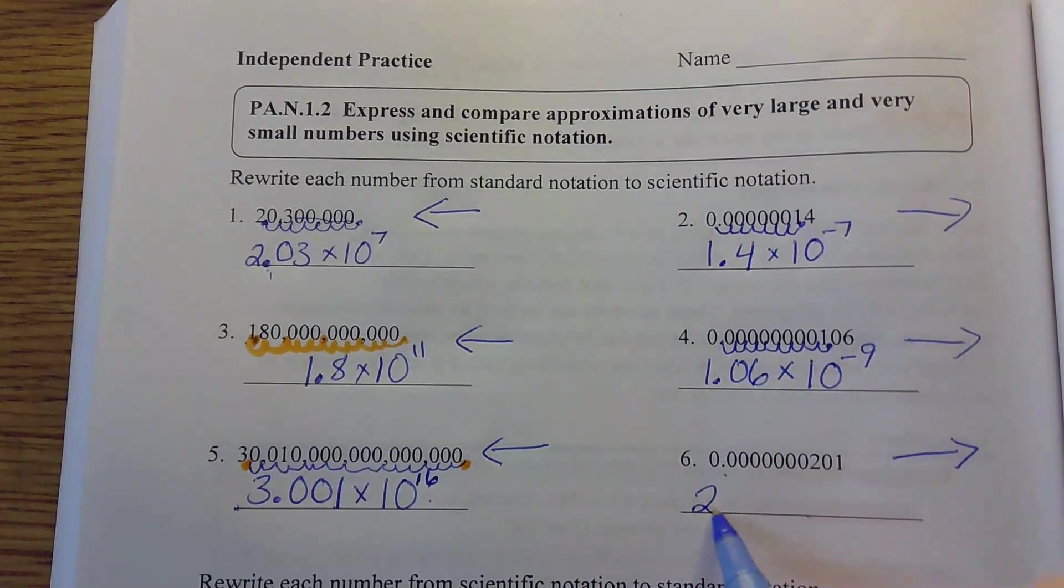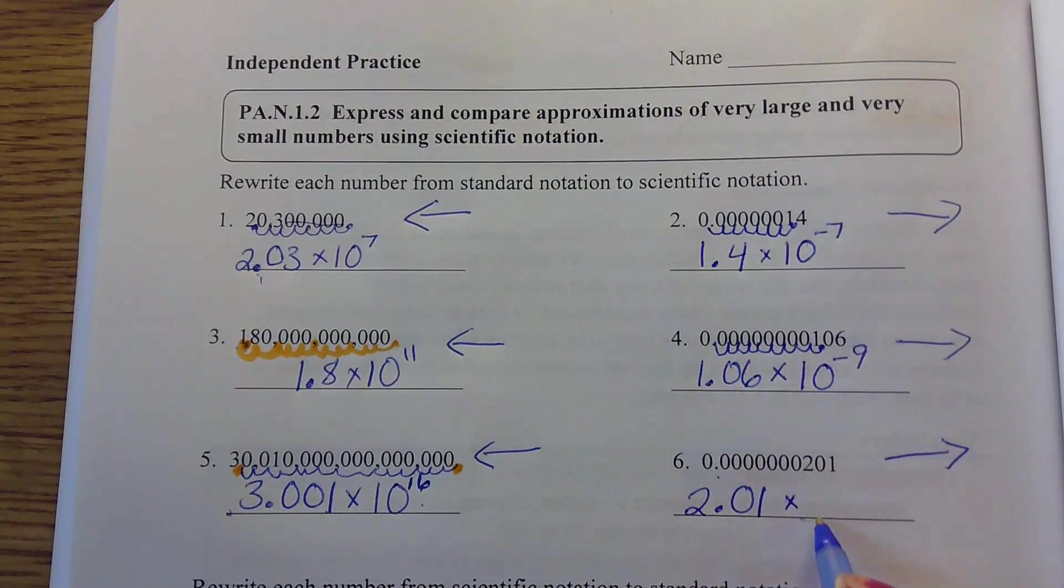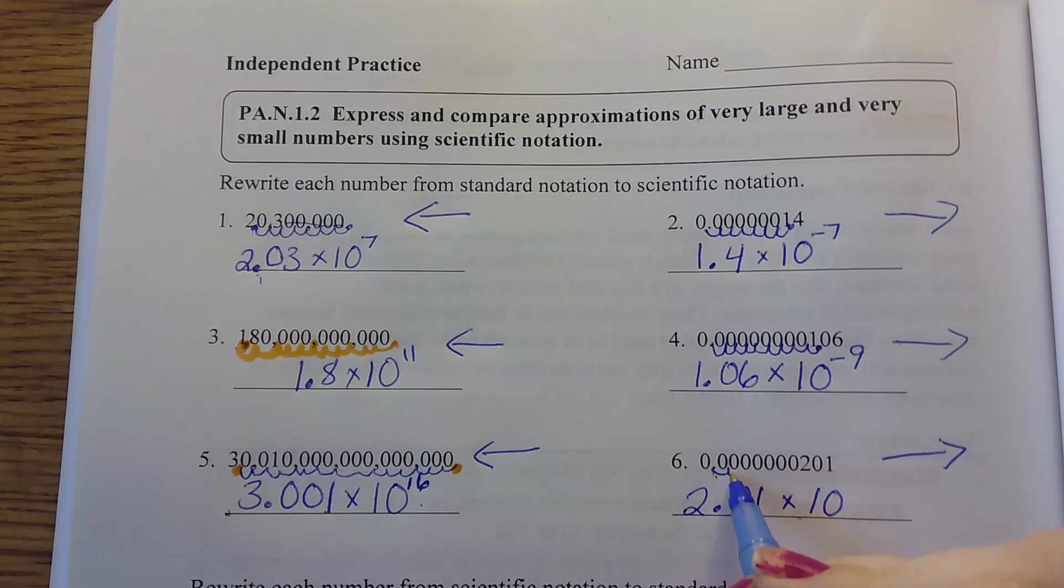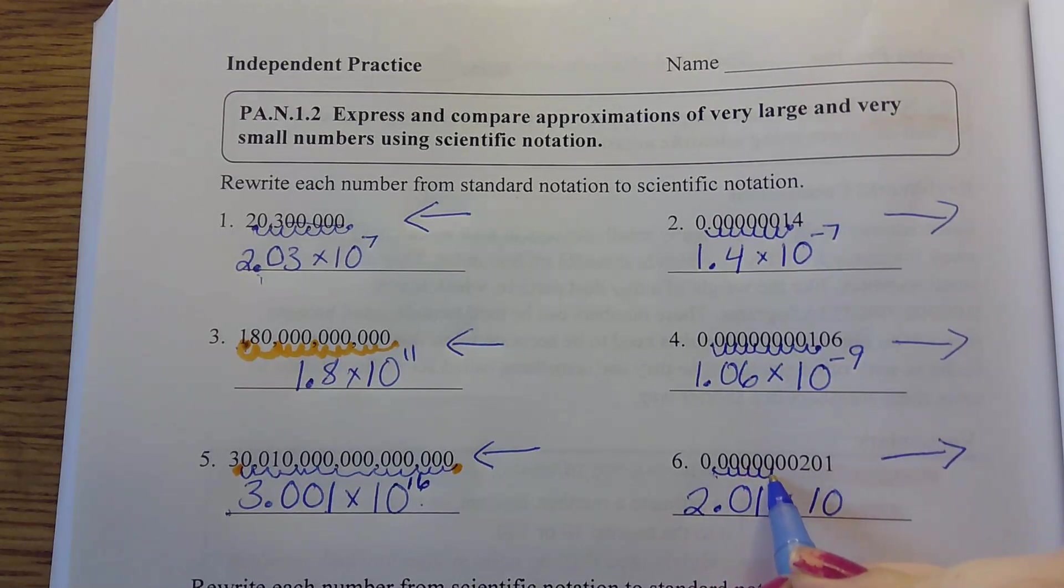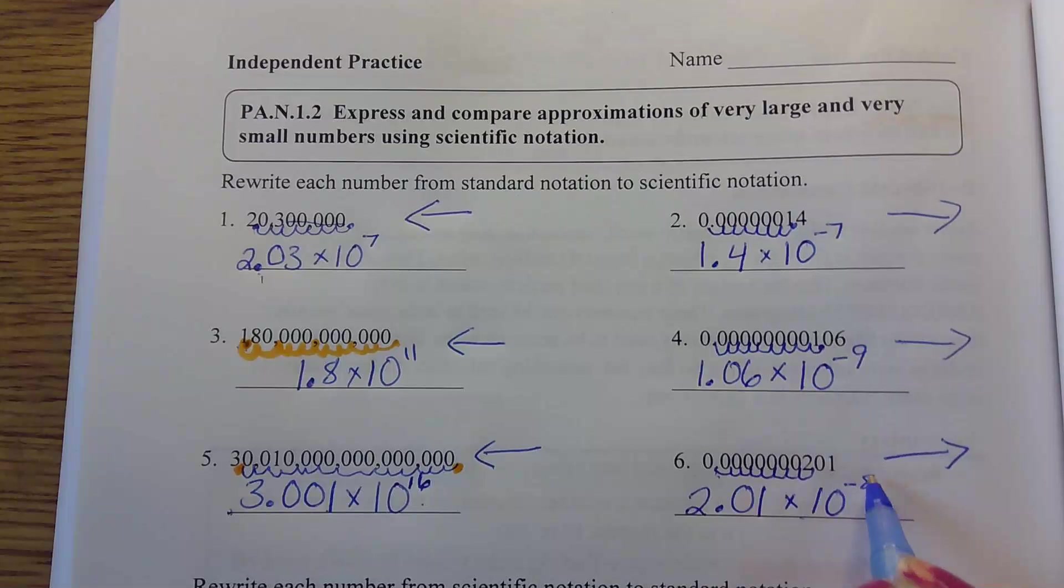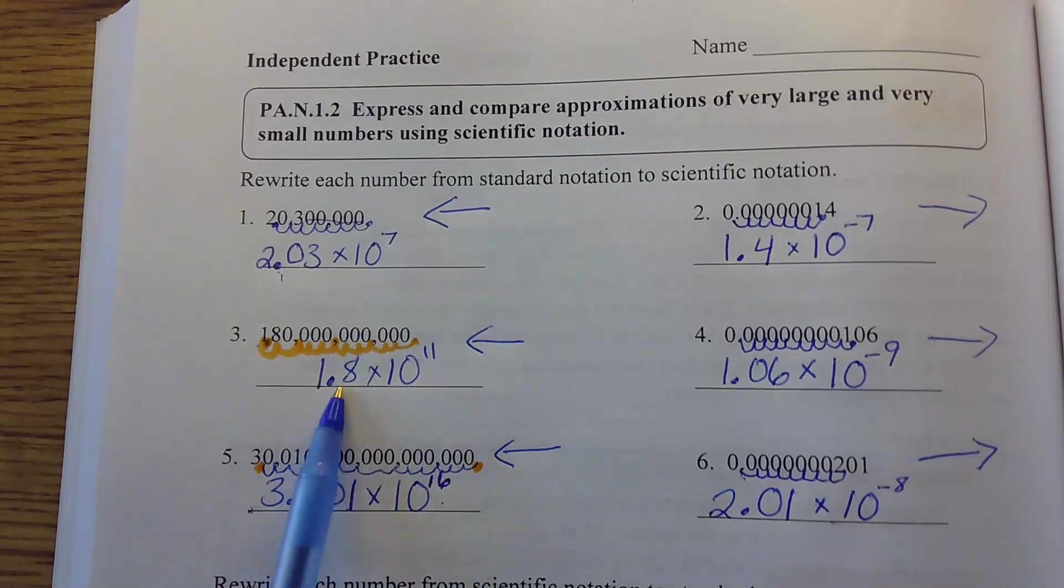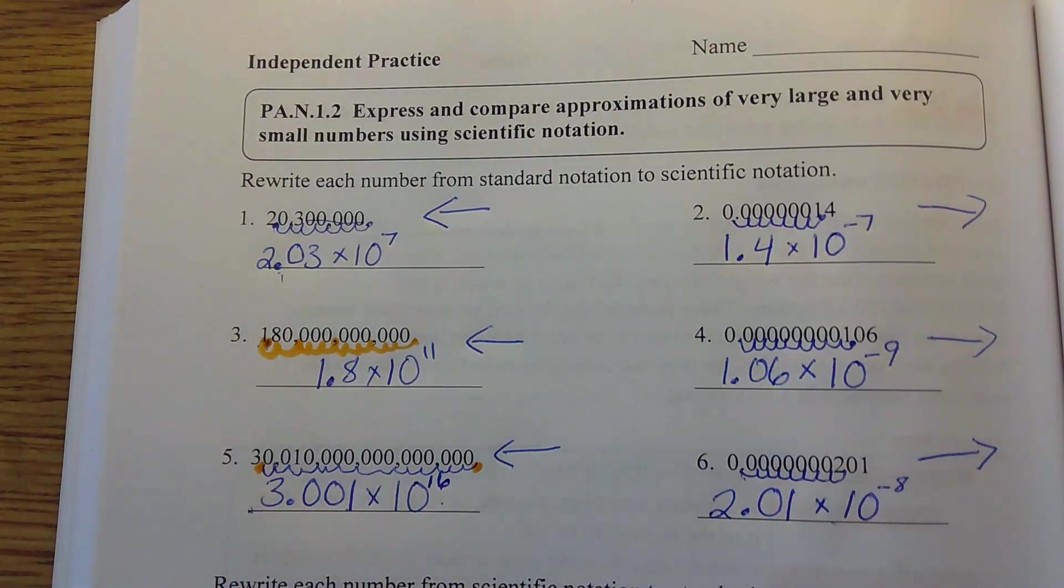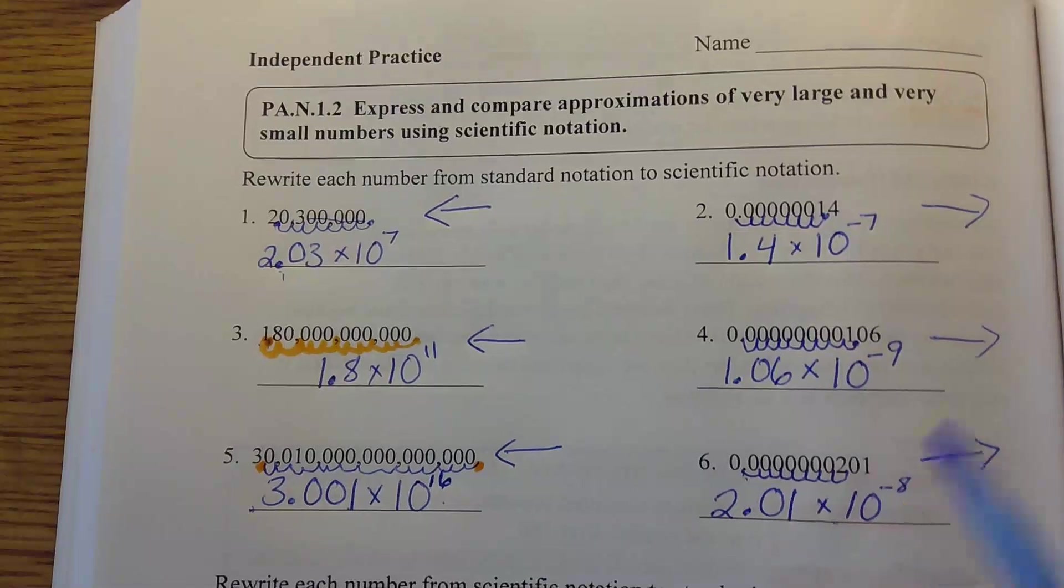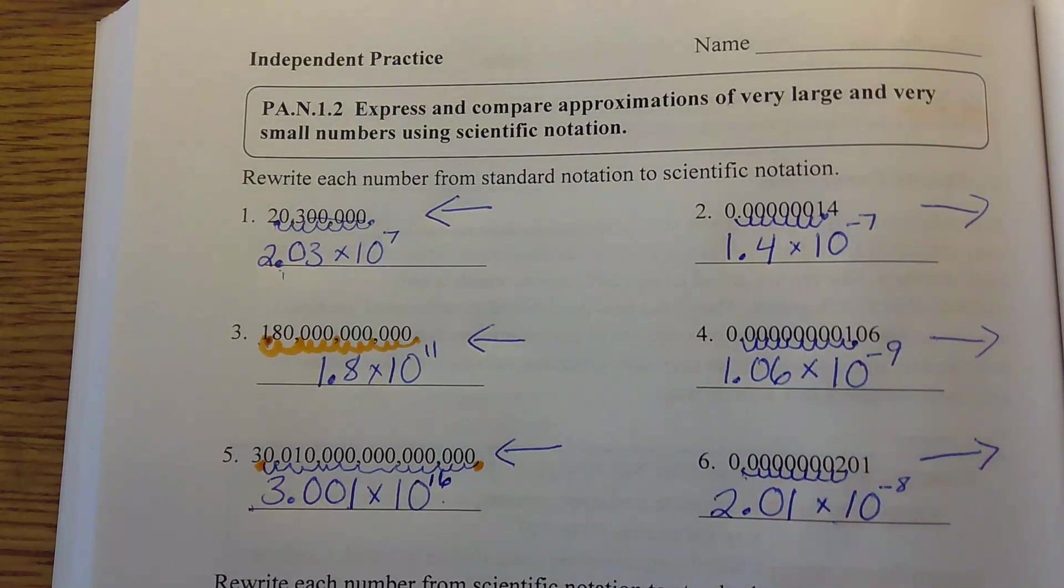Here we have 2.01 times what's our base? 10. We're moving it 1, 2, 3, 4, 5, 6, 7, 8. 10 to the negative 8. Notice when our exponent is bigger, this number gets bigger. When our exponent is negative, the higher the negative number, the smaller the number whenever you multiply it out and put it in standard form.